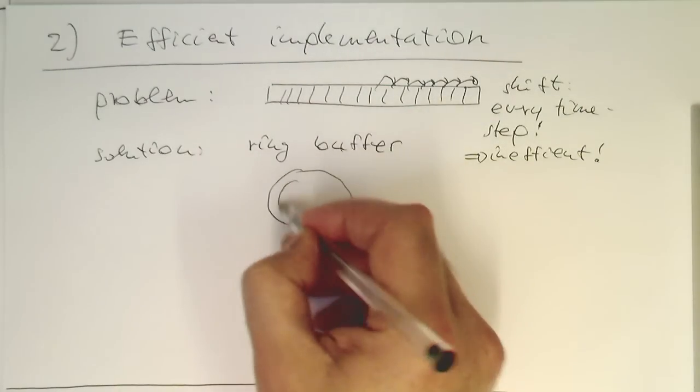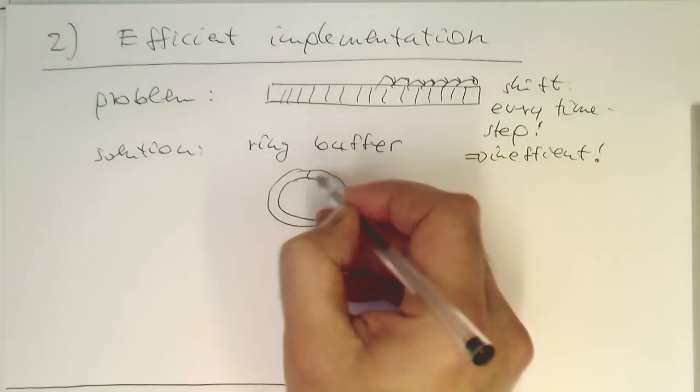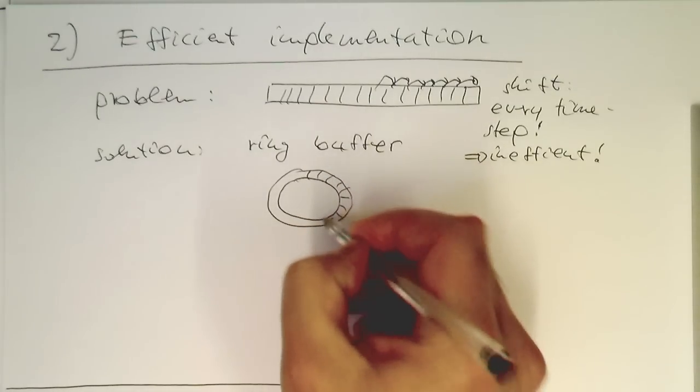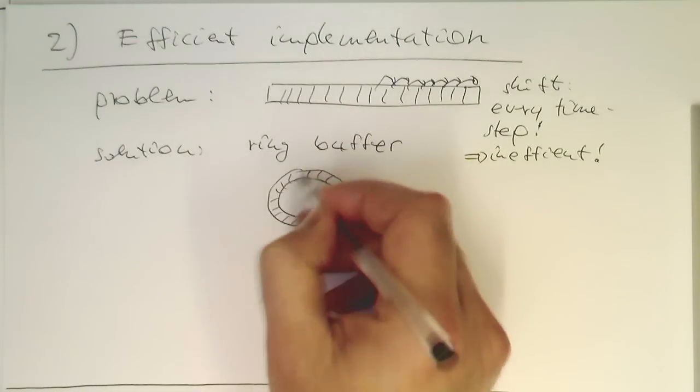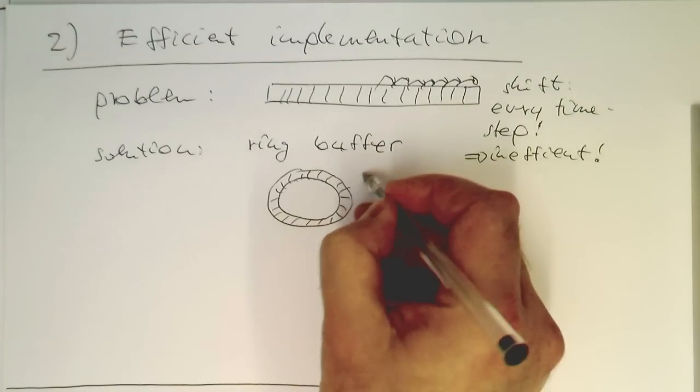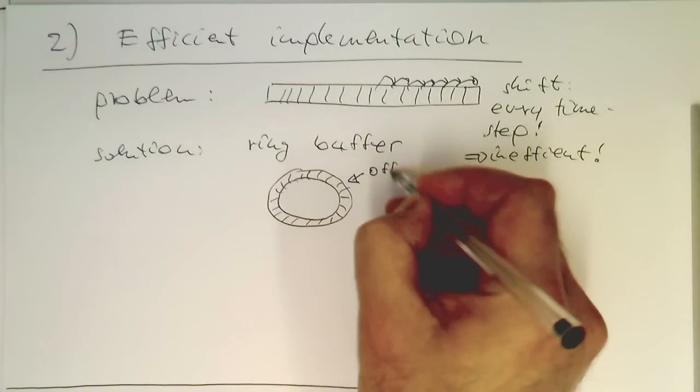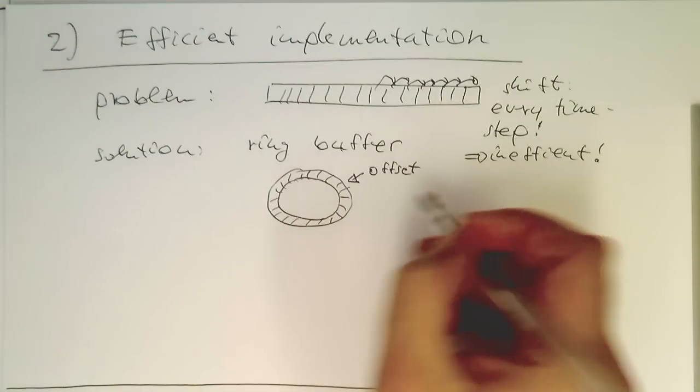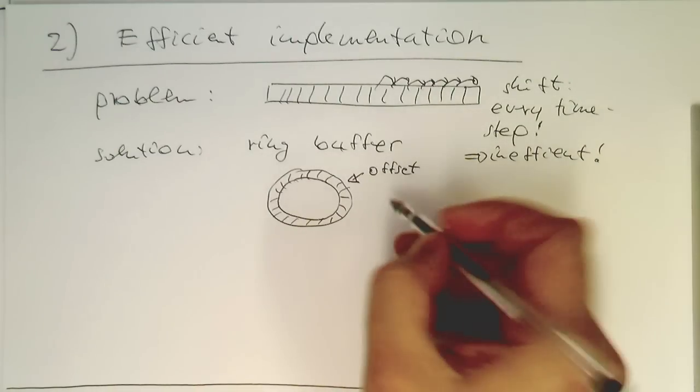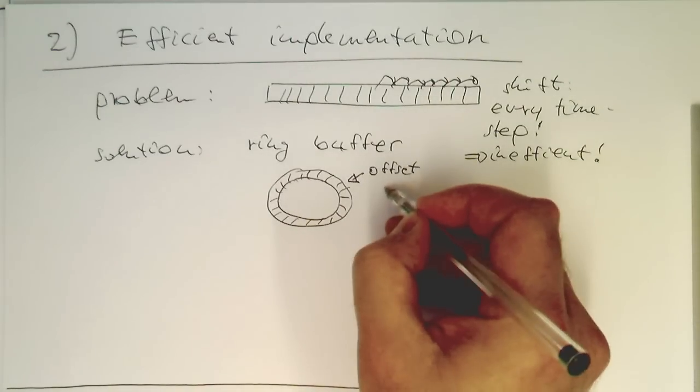A ring buffer is where the data is stored in this way here. And we just define basically an offset. And at this offset, we just store our new data.